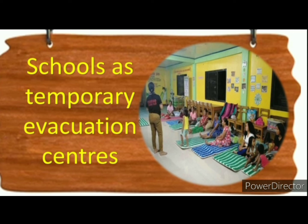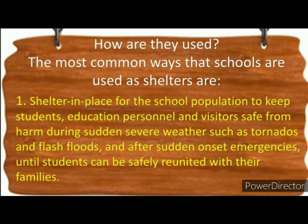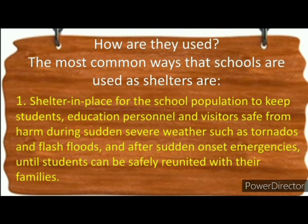Because of a conscious effort to protect children in many communities, schools are designed and constructed to be the most disaster-resilient structures available. The most common ways that schools are used as shelters are: first, shelter in place for the school population — to keep students, educational personnel, and visitors safe from harm during sudden severe weather such as tornadoes and flash floods, and after sudden onset emergencies, until students can be safely reunited with their families.